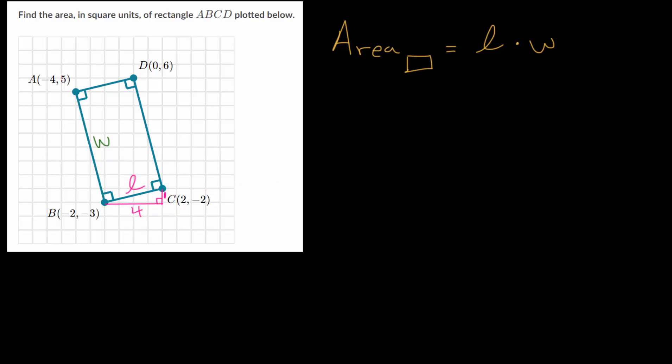So to find L we know that the Pythagorean theorem is just a squared plus b squared is equal to c squared. And a and b are the legs of the triangle, the right triangle. And c is the hypotenuse.